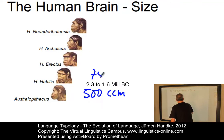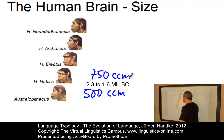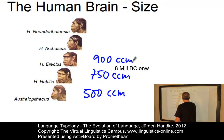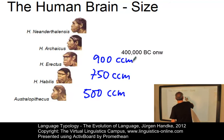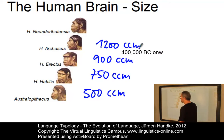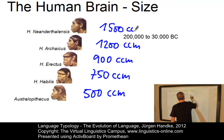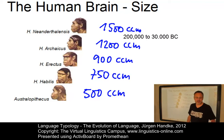The Habilis brain is larger, roughly 750 cubic centimeters. Homo erectus had a brain whose size was something like 900 cubic centimeters. The first representative of Homo sapiens increased this once more to 1,200 cubic centimeters. And Homo neanderthalensis had an even larger brain, with 1,500 cubic centimeters.